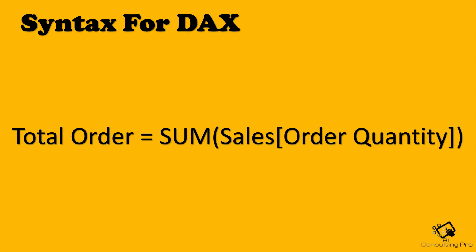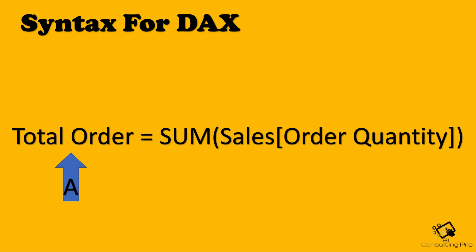For example, let's talk about this formula 'Total Order,' where I'm getting the total order from the Sales table. In the Sales table I have a column called Order Quantity. The very first part of the formula is the measure name — here I am creating a measure called Total Order.